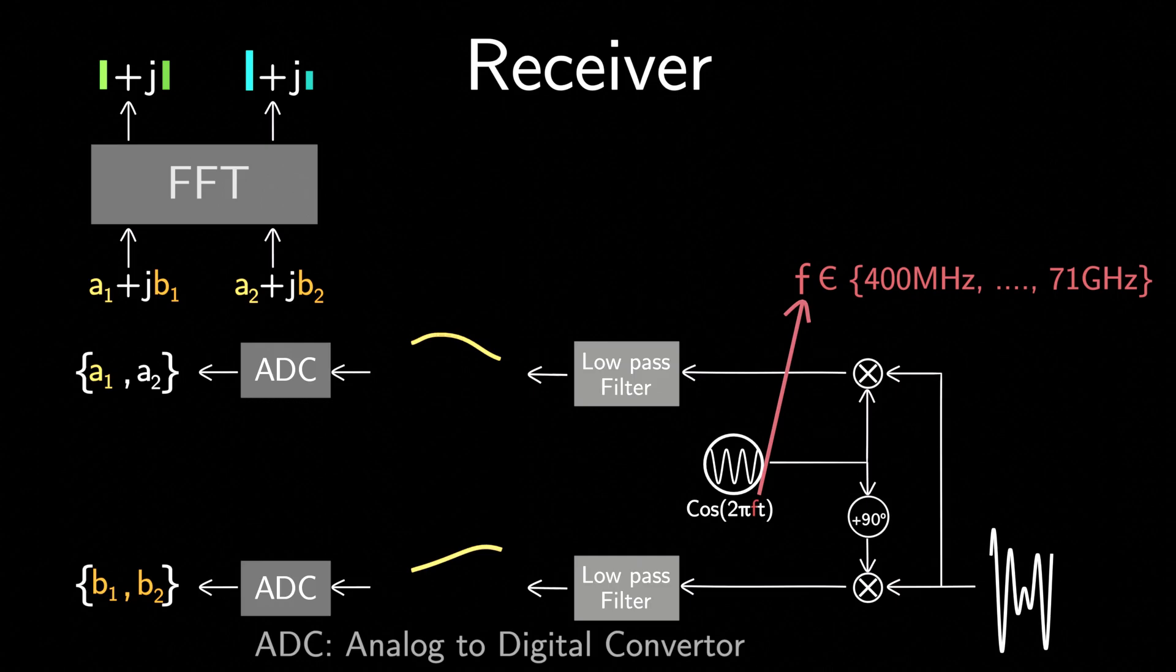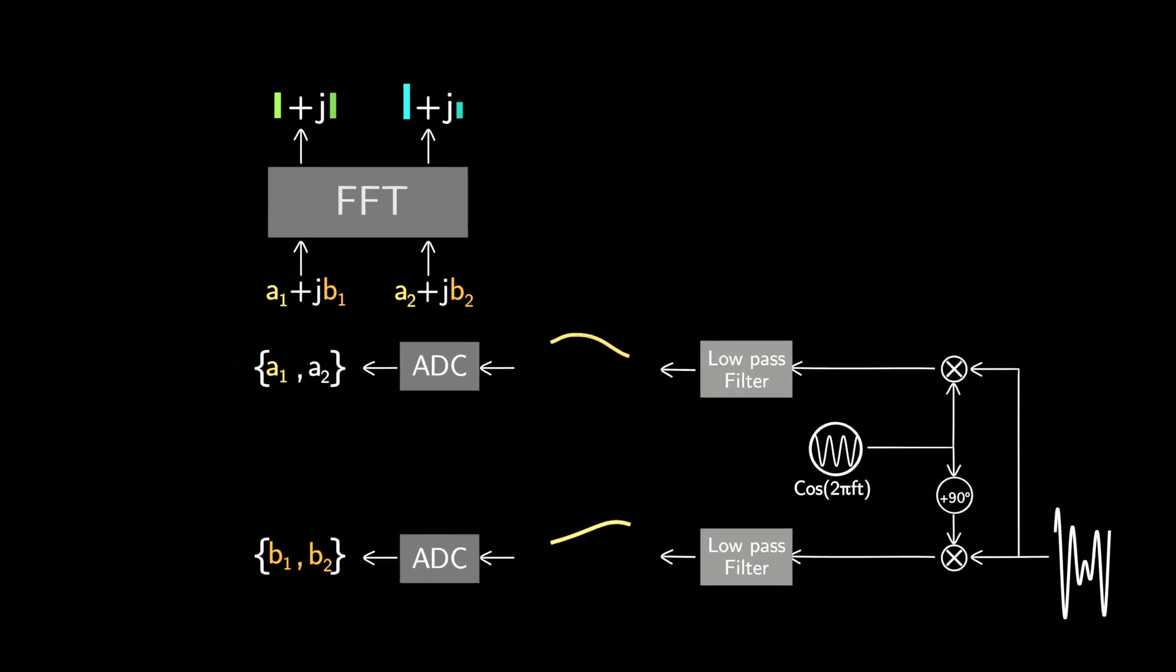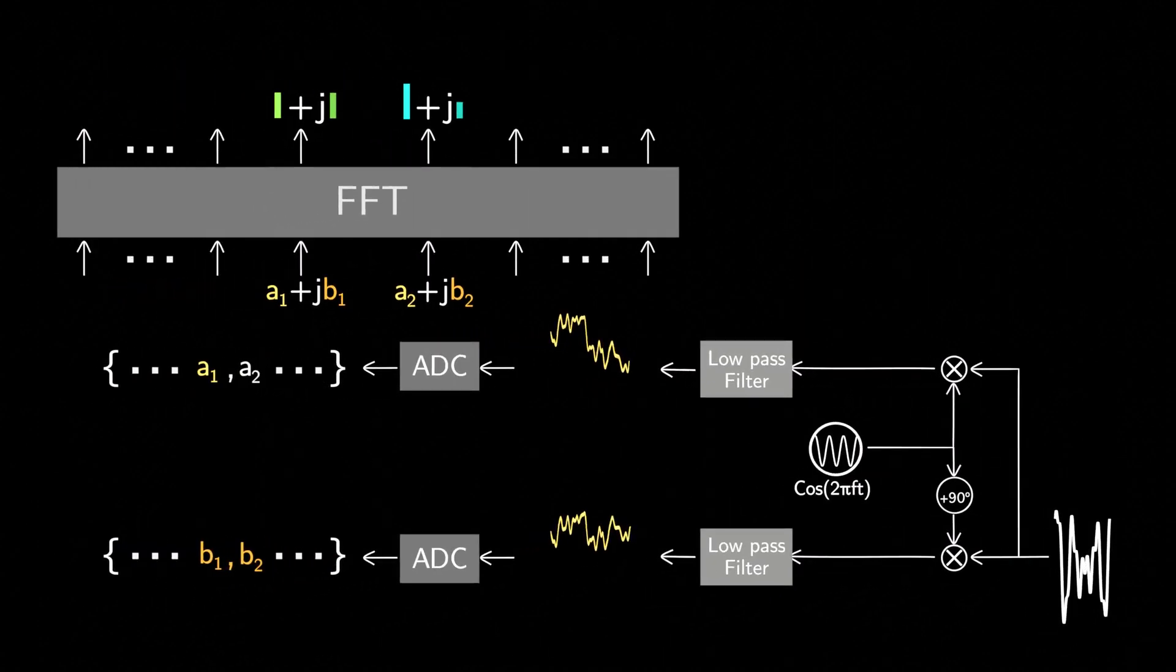The symbol duration, TS, can be as small as 125 microseconds for 5G. Real-world systems use a lot of subcarriers. 5G can use up to 4,096 subcarriers.